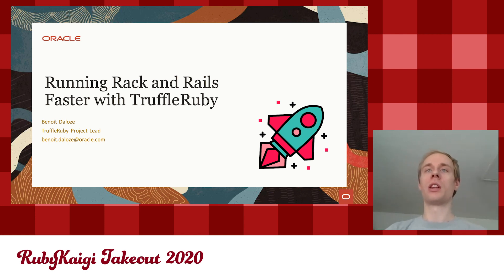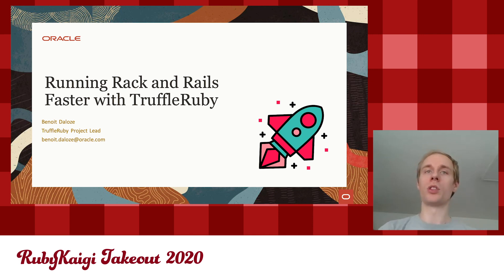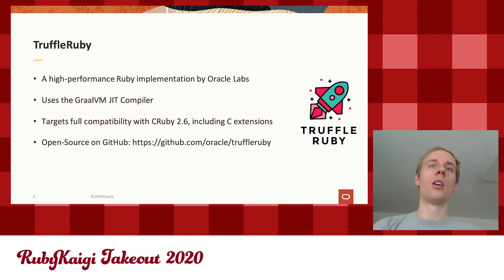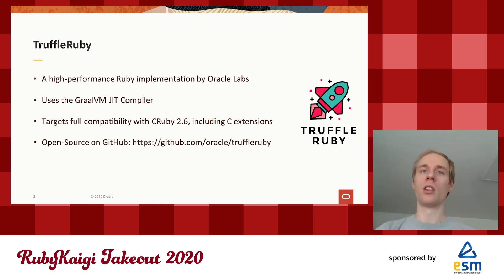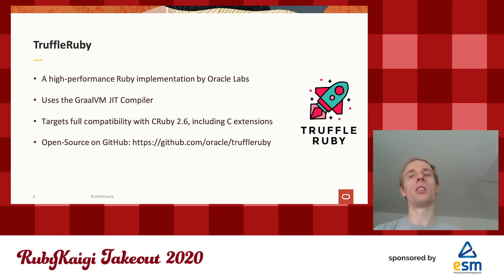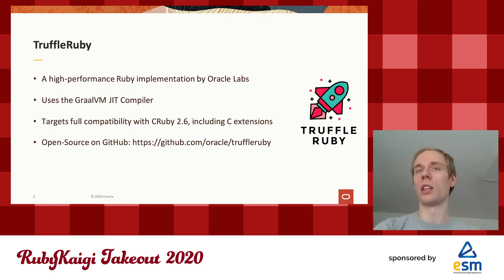Hello and welcome to my talk on running Rack and Rails faster with TruffleRuby. My name is Benoît Daloze and I'm the project lead of TruffleRuby. TruffleRuby, if you don't know it yet, is a high-performance Ruby implementation by Oracle Labs. It uses the Graal JIT compiler to achieve its good performance. It targets full compatibility with CRuby 2.6, including C extensions. It's open source and on GitHub.